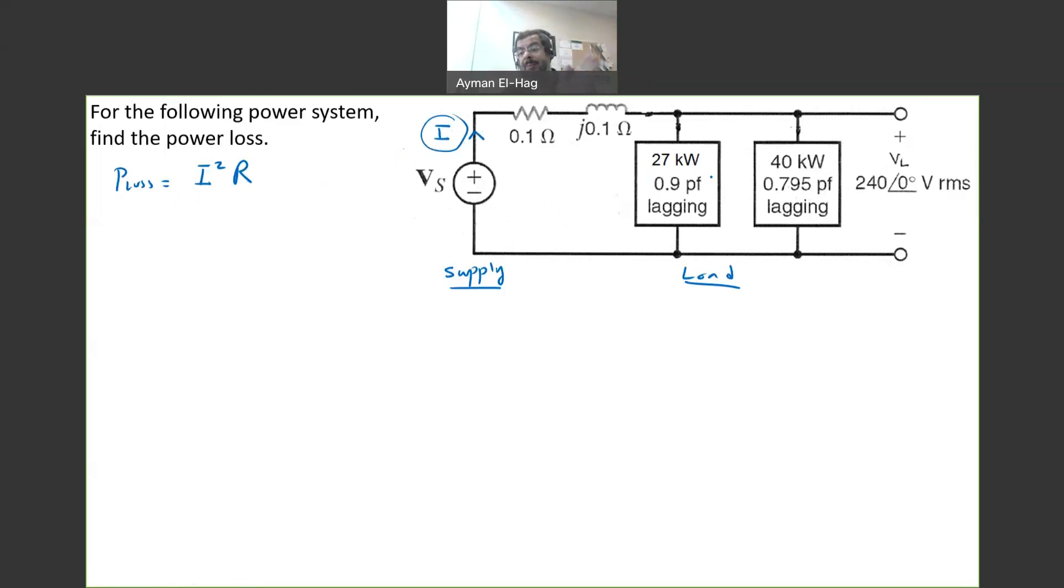we have two loads in parallel, and we know that in power system, we connect the loads in parallel. This could be like two parallel houses and the power coming from the substation, and this is the cable that joins the power from the supply to these two houses.